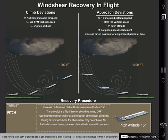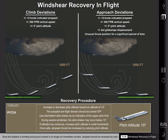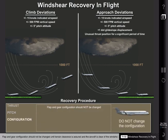If the vertical flight path or altitude loss is still unacceptable after reaching 15 degrees, increase pitch attitude further in small increments. 7. Once the airplane is climbing and ground contact is no longer an immediate concern, airspeed should be increased by making small reductions in pitch attitude. 8. Flap and gear configuration should not be changed until terrain clearance is assured and the aircraft is clear of the wind shear. Although a small performance increase is available after landing gear retraction, initial performance degradation may occur when landing gear doors open for retraction.